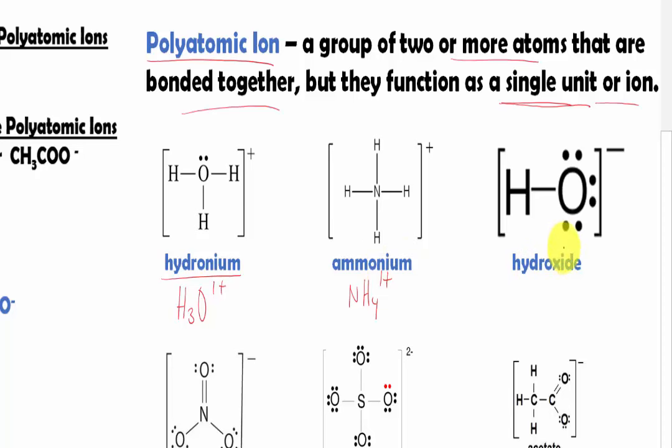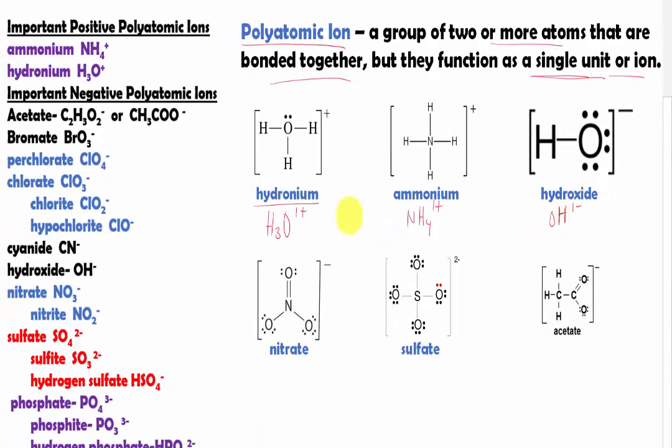And over here we have another example which is hydroxide. Hydroxide is basically a group of oxygen and hydrogen, so we have OH minus or one minus charge. So not all of them are going to have a positive charge. Some of them have a minus charge.